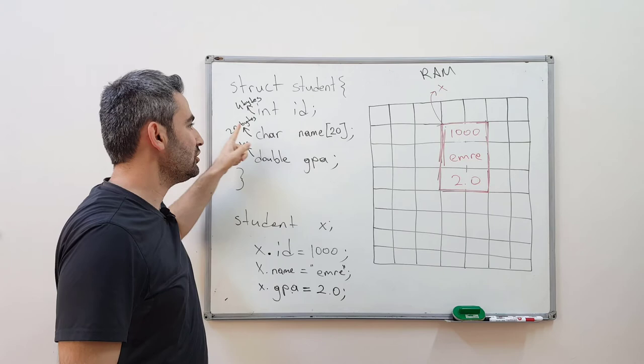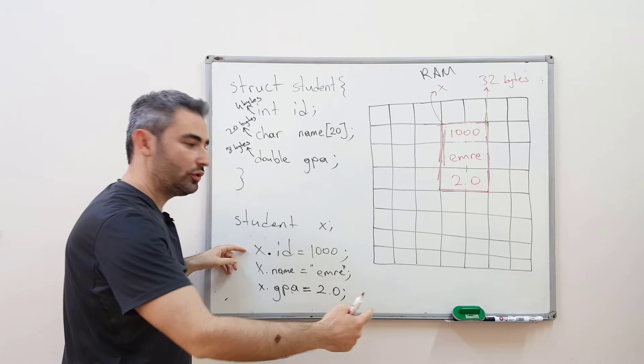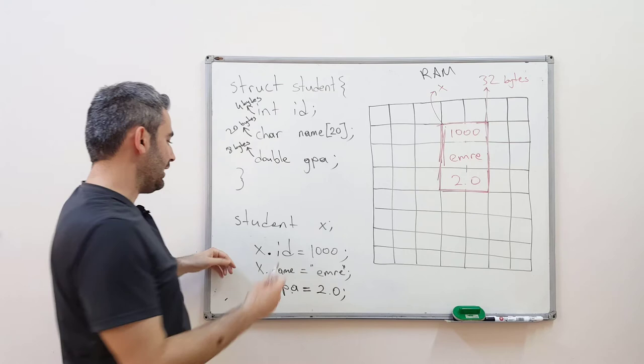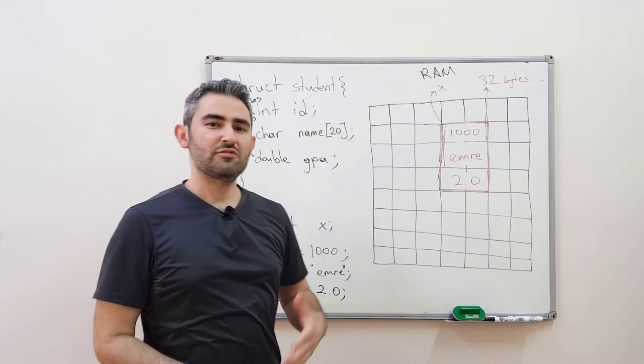You can add more primitive data type variables inside the structure, and the total memory allocated will reflect all of them — 32 bytes in this case. You access a structure's features using dot notation and assign values to them. This is how you create a complex data type from primitive data types combined together — that is basically what a structure is.